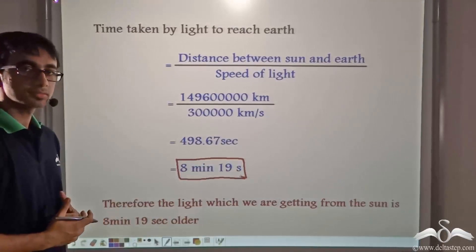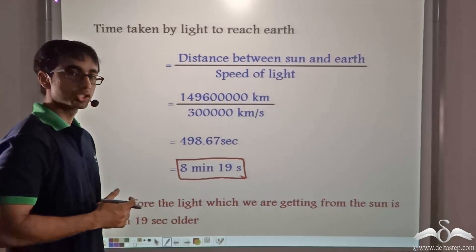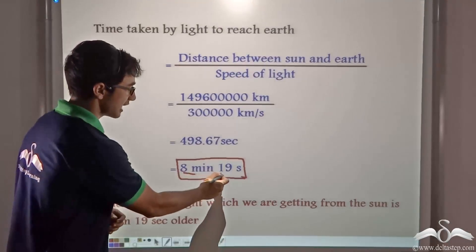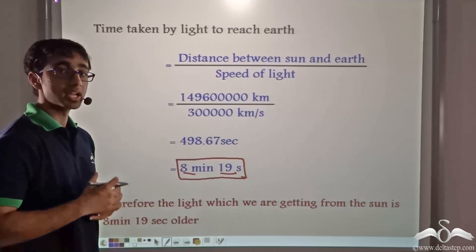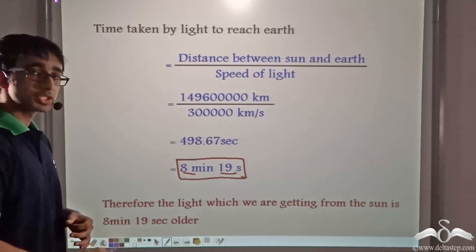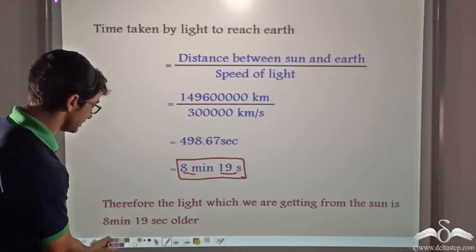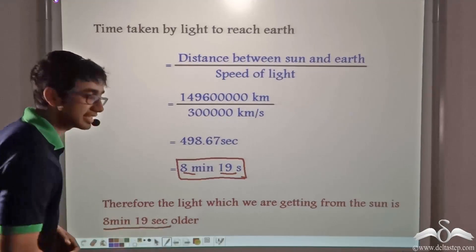So what do we learn? We learn that it takes light 8 minutes 19 seconds to reach the earth from the sun. In other words, we can say that the light which you are getting from the sun is 8 minutes and 19 seconds older.